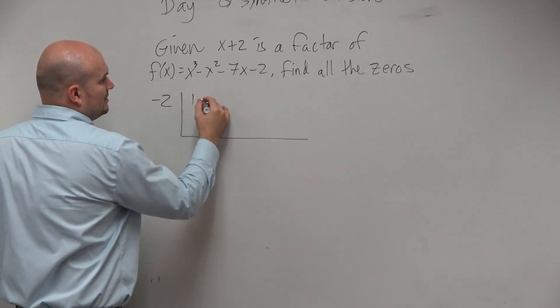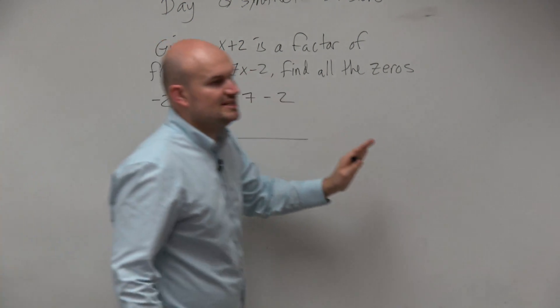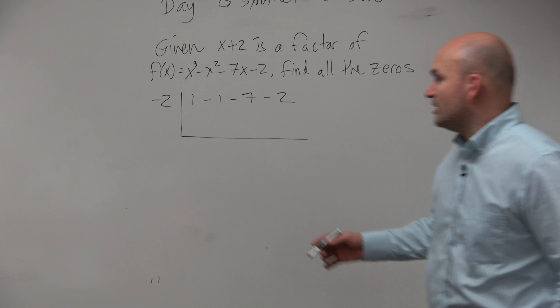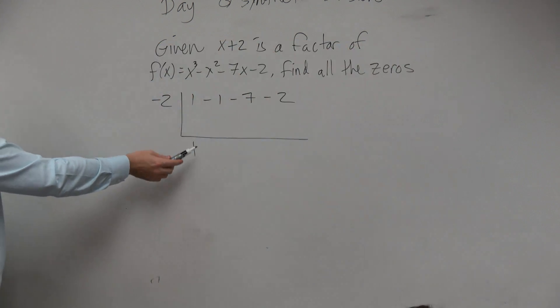So we have 1, negative 1, negative 7, negative 2, right? There's no missing terms or anything like that. We're basically good to go. So we always bring down the first number, multiply on the diagonals, add on the verticals.